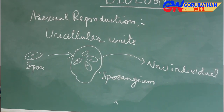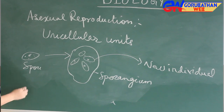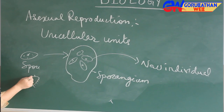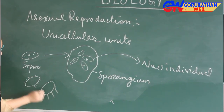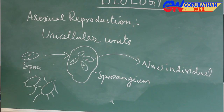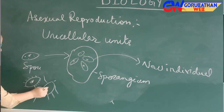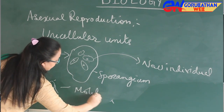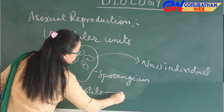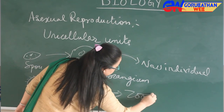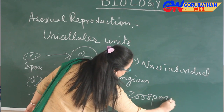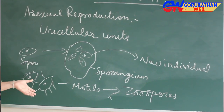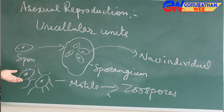Now, sometimes spores are provided with cilia or sometimes flagella. If the spore is provided with cilia or flagella, then it is called a motile spore, and this type of spore is called a zoospore. This type of spore you will find in Chlamydomonas, Ulothrix, and Vaucheria.